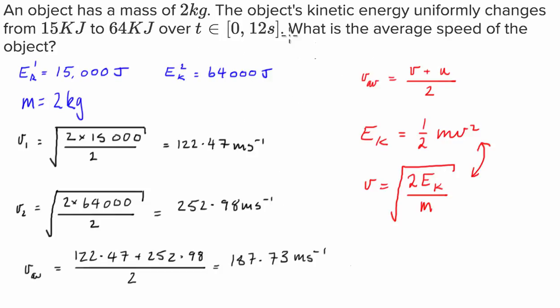So I think the reason why it has this time interval here is because there might be a second part to this question, which then asks how far did the object go over the time interval. Which you could just simply go 187.73 multiplied by 12. But this question isn't asking that. It's just asking for the average speed of the object, which we worked out to be 187.73.